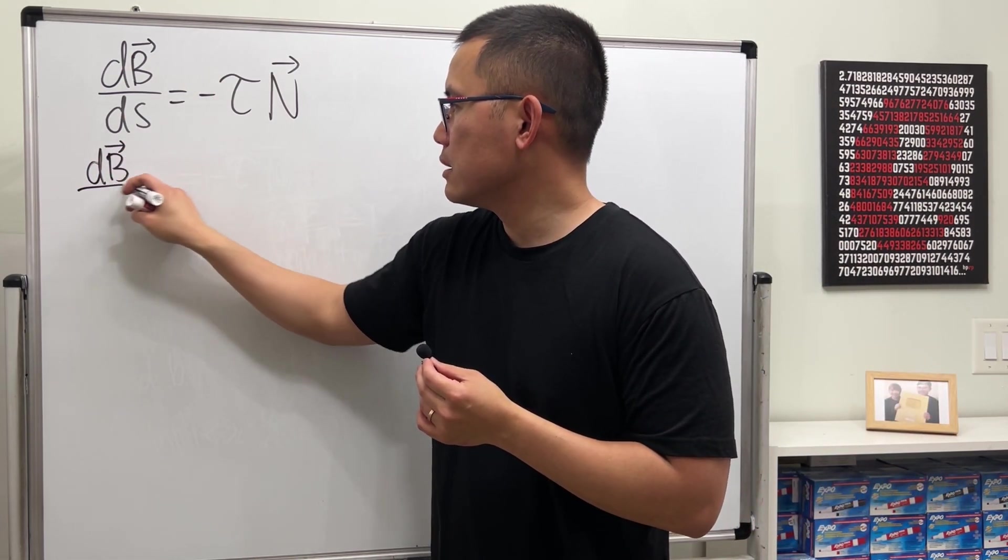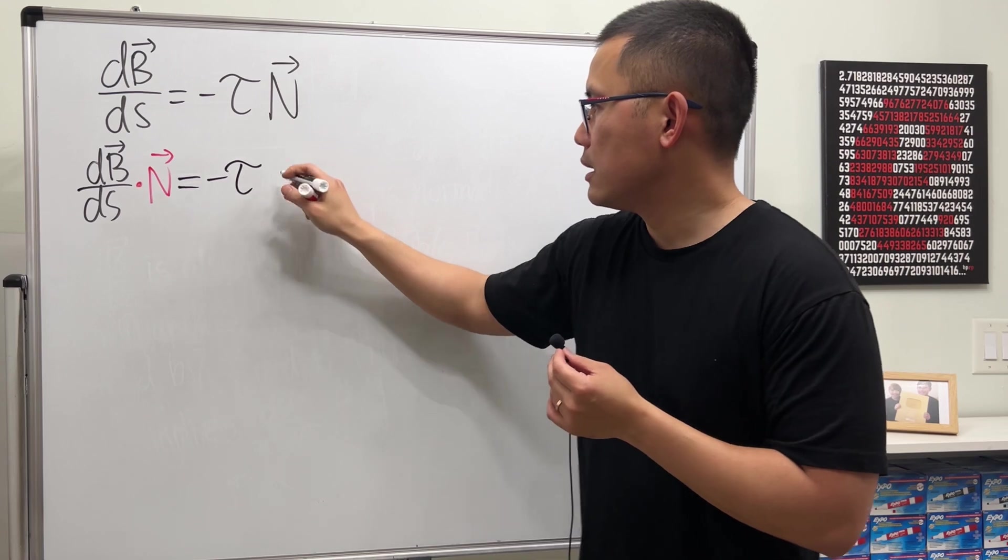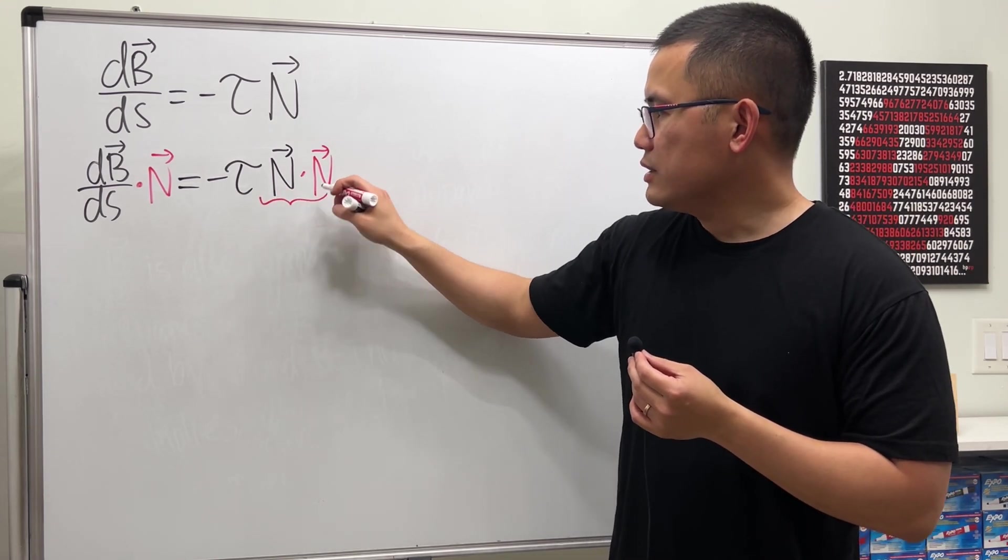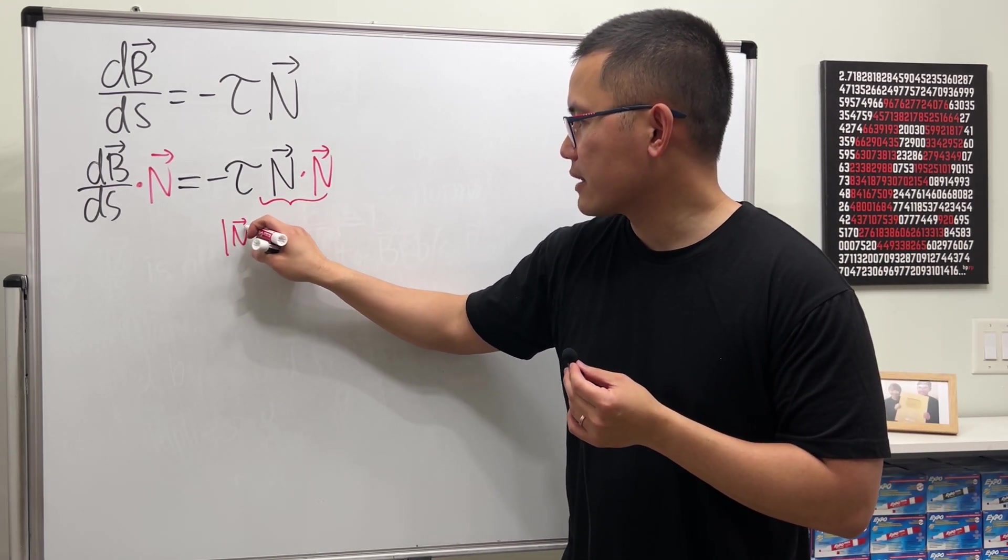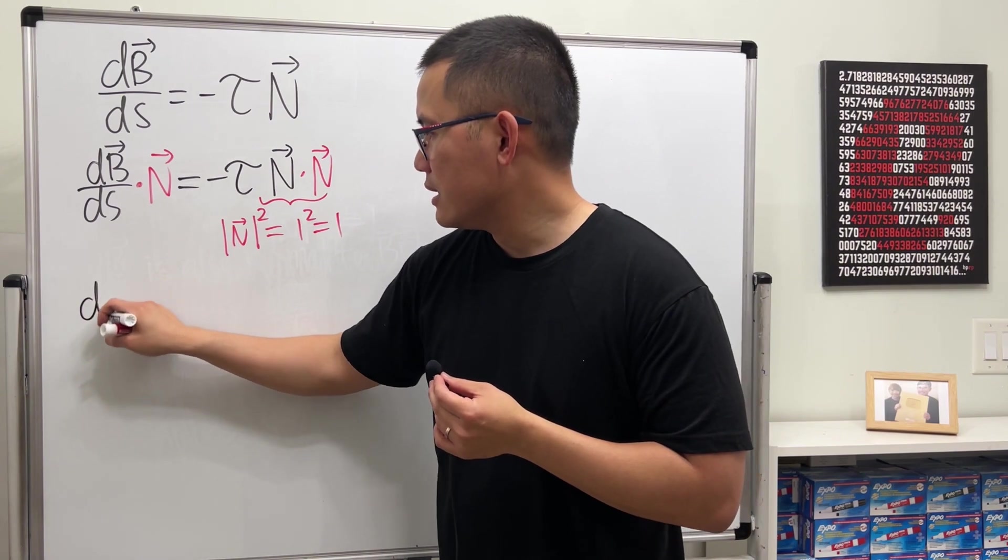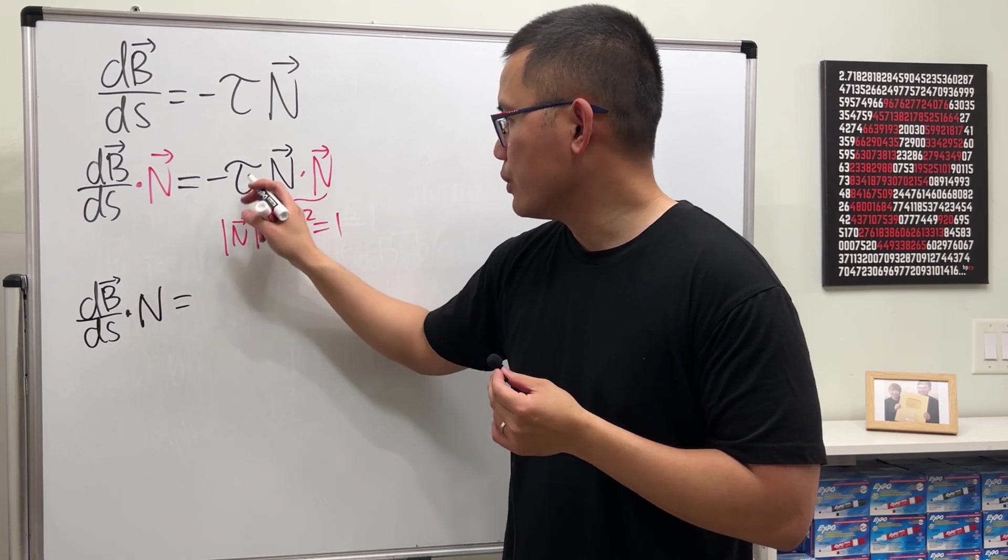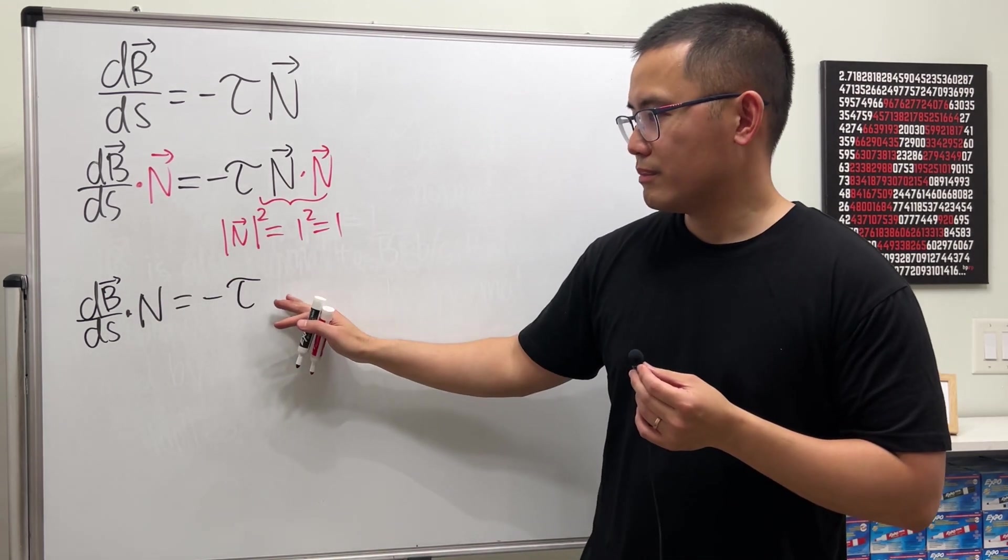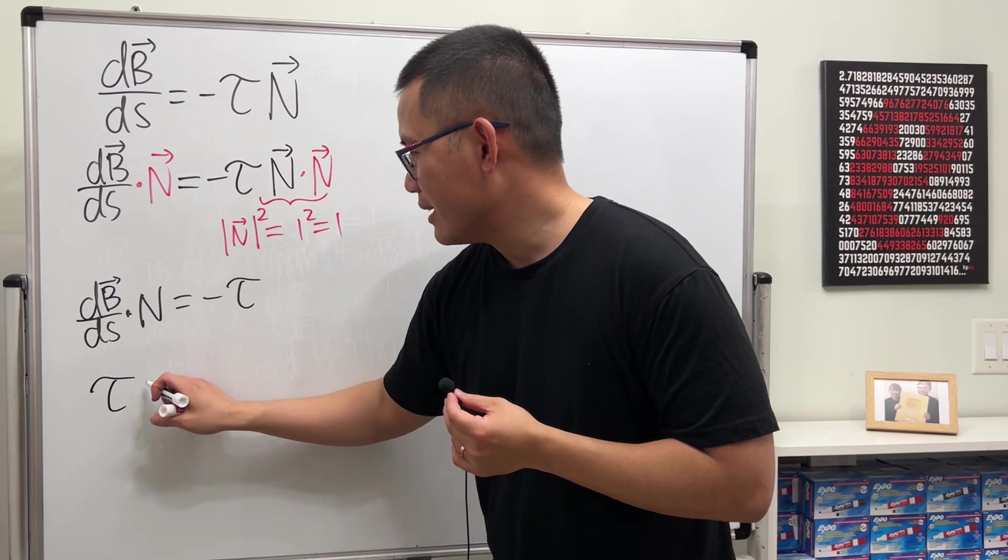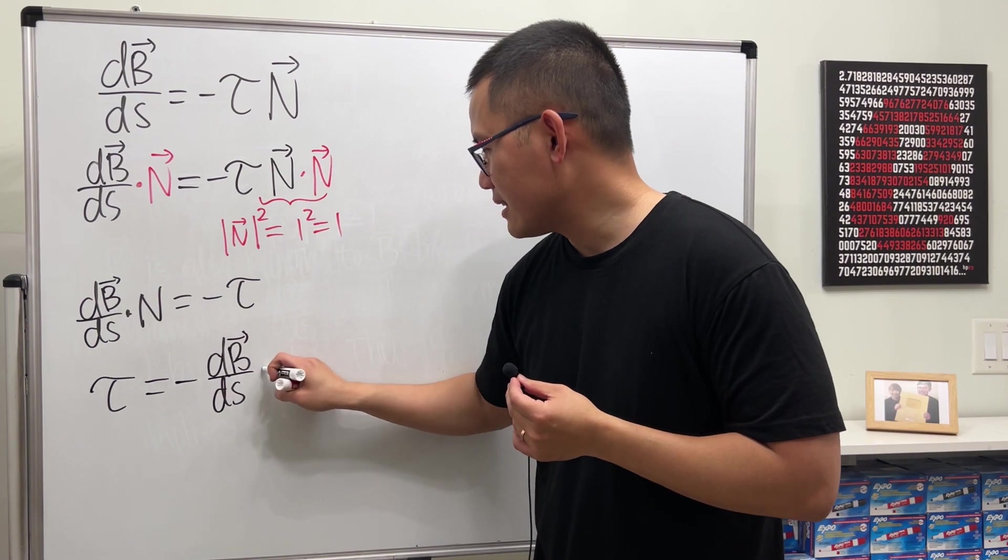So, we are going to look at this equation. And then we'll do the dot product with N on both sides. And this right here is just a scalar multiplication. But here is the dot product. This right here, we will get the magnitude of the vector squared. And that's just equal to 1. Square that is just 1. So, in another word, we see dB/ds dot N is equal to negative tau. Finally, we can just divide negative on both sides. This is just a constant, right? Negative 1. So, tau is equal to negative dB/ds dot N.